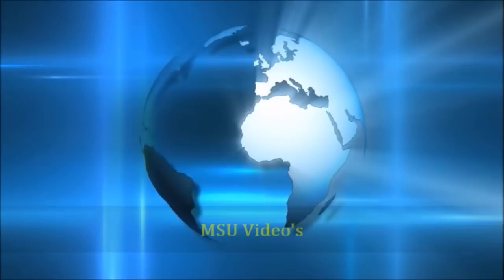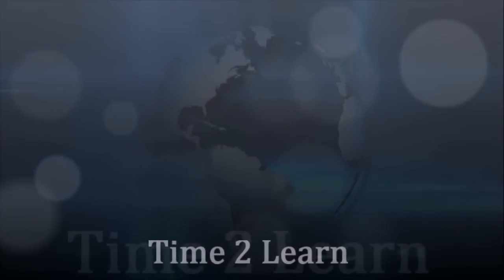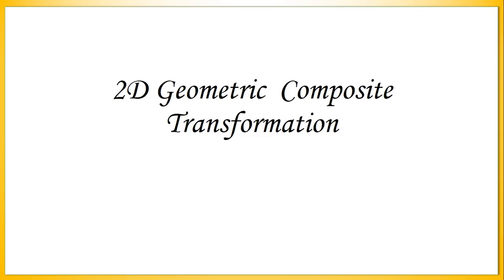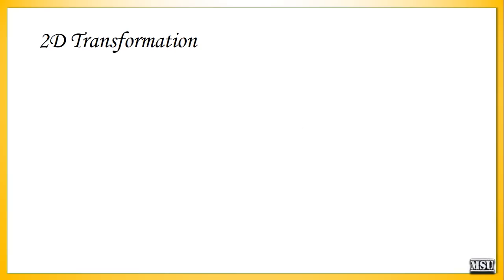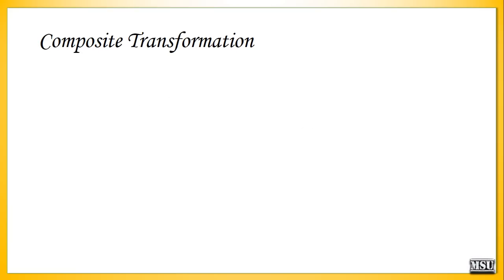Welcome to MSV videos. Last class we discussed about 2D transformation — changing any 2D object's position, size, or orientation is defined as a transformation. In this video lecture, we are going to discuss about 2D composite transformation.